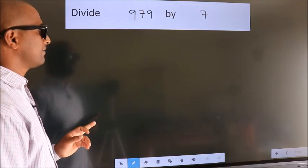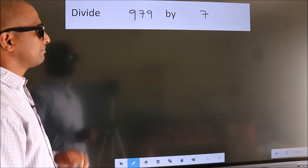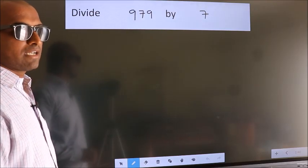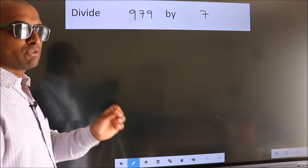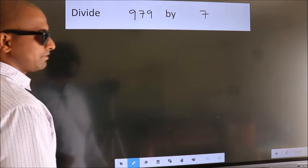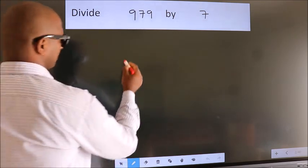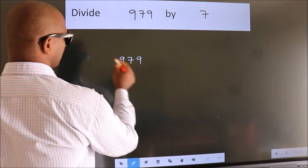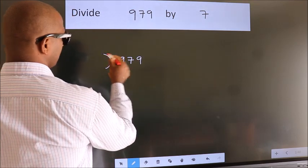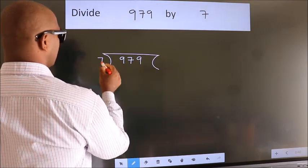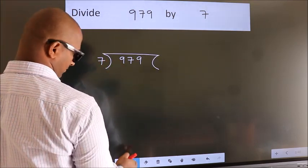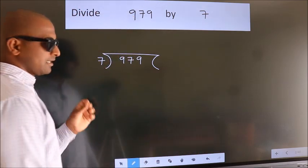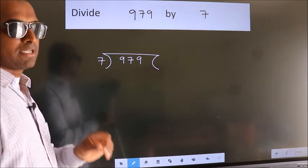Divide 979 by 7. To do this division, we should frame it in this way: 979 here, 7 here. This is your step 1.